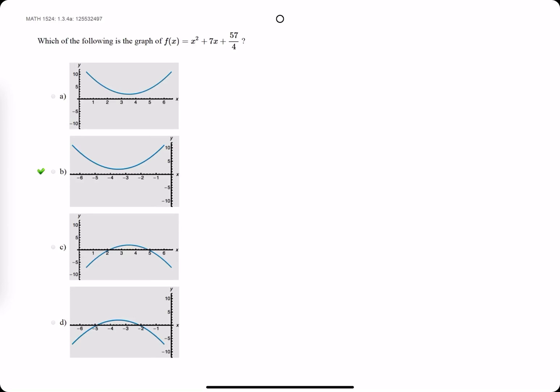Okie dokie. So, in another example for this problem, we're given the function x squared plus 7x plus 57 over 4.